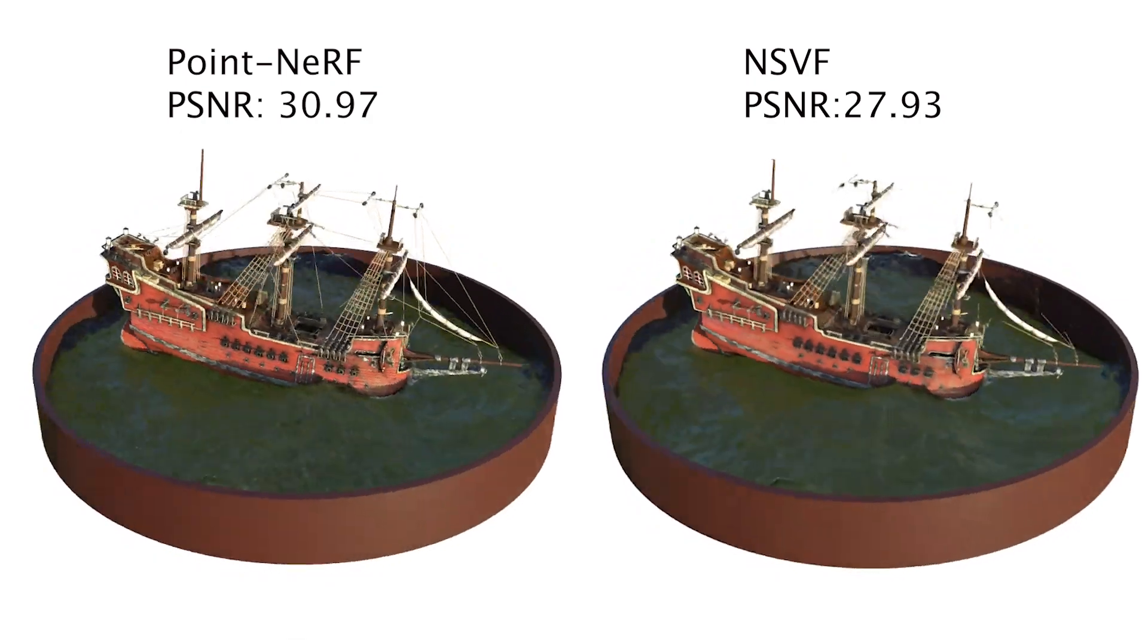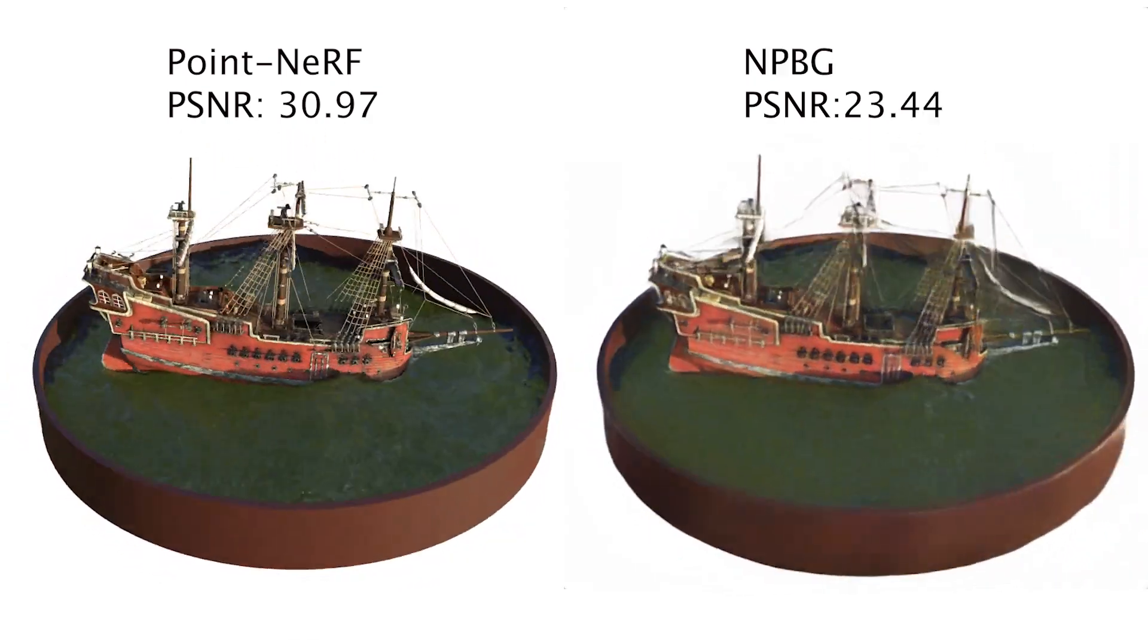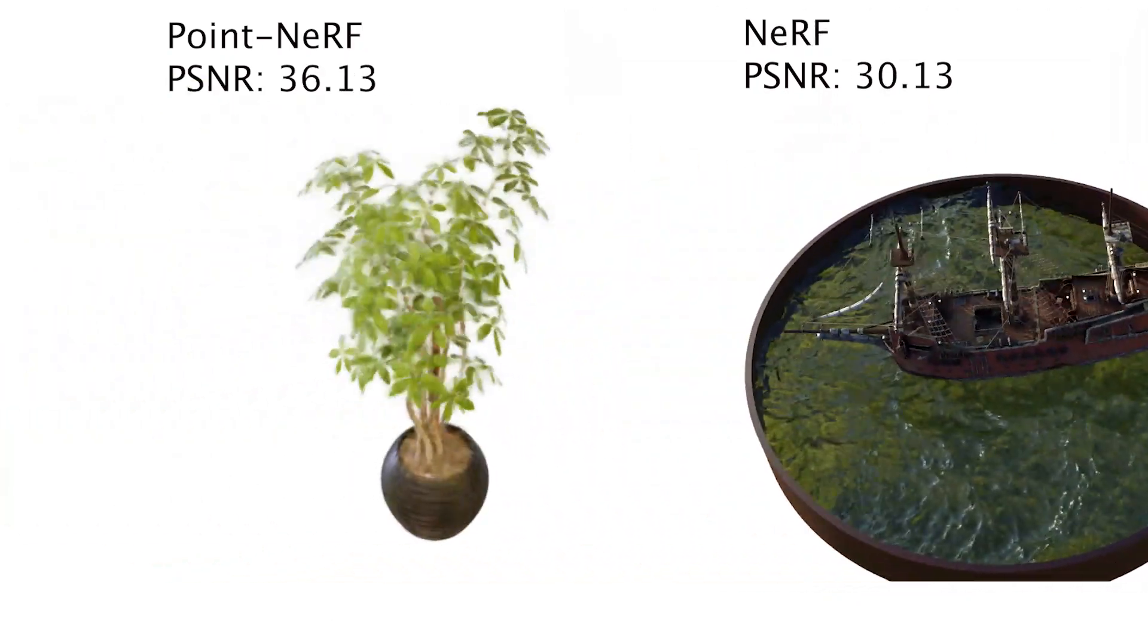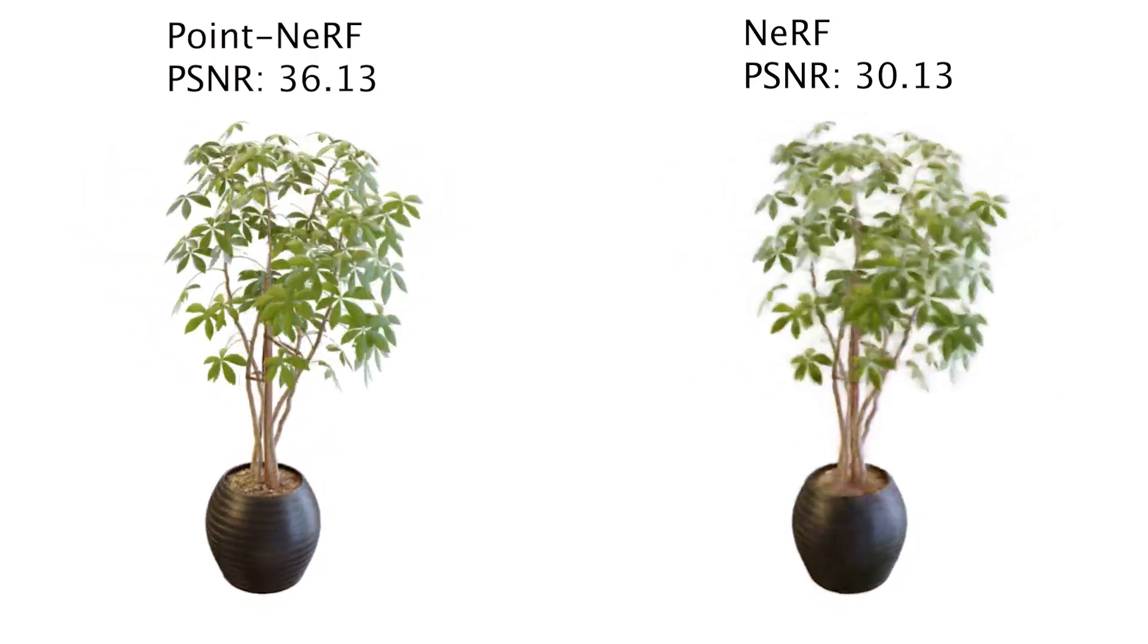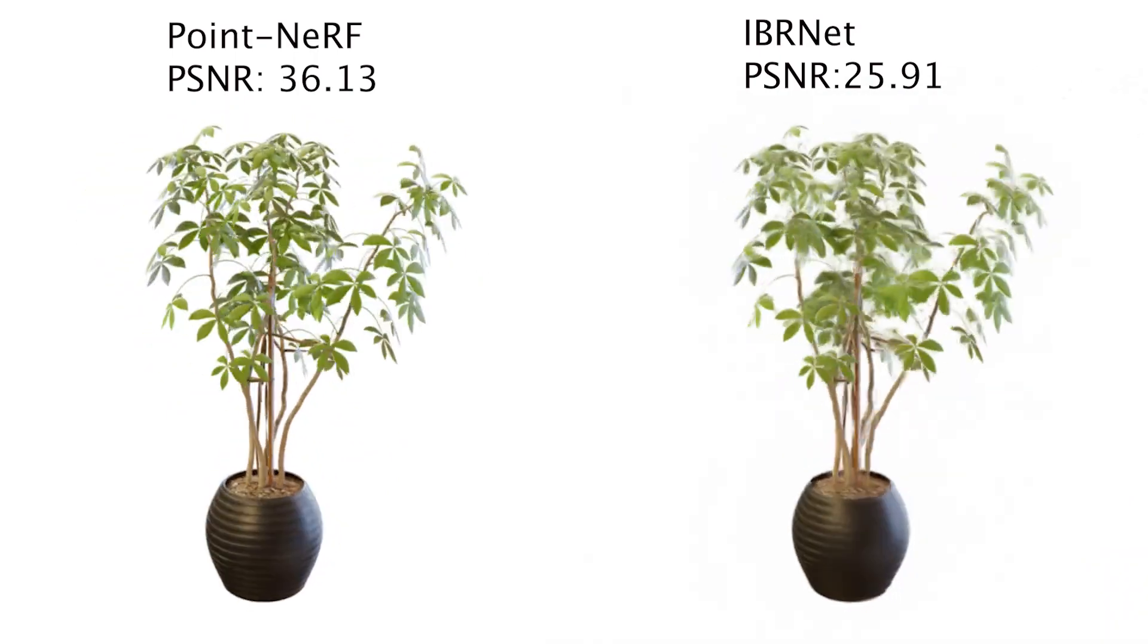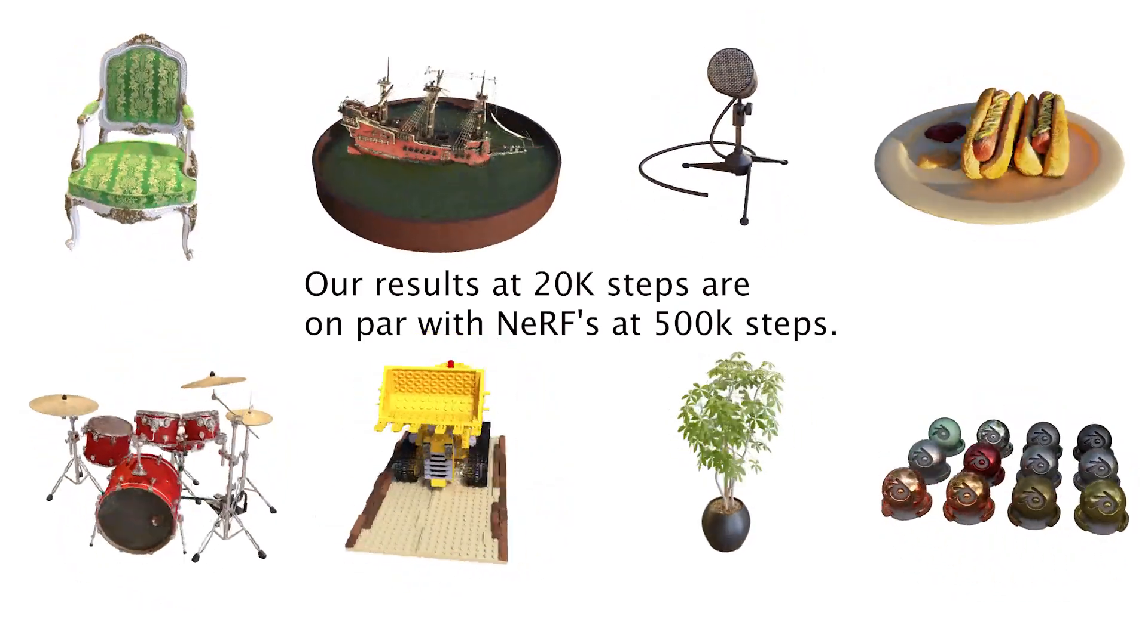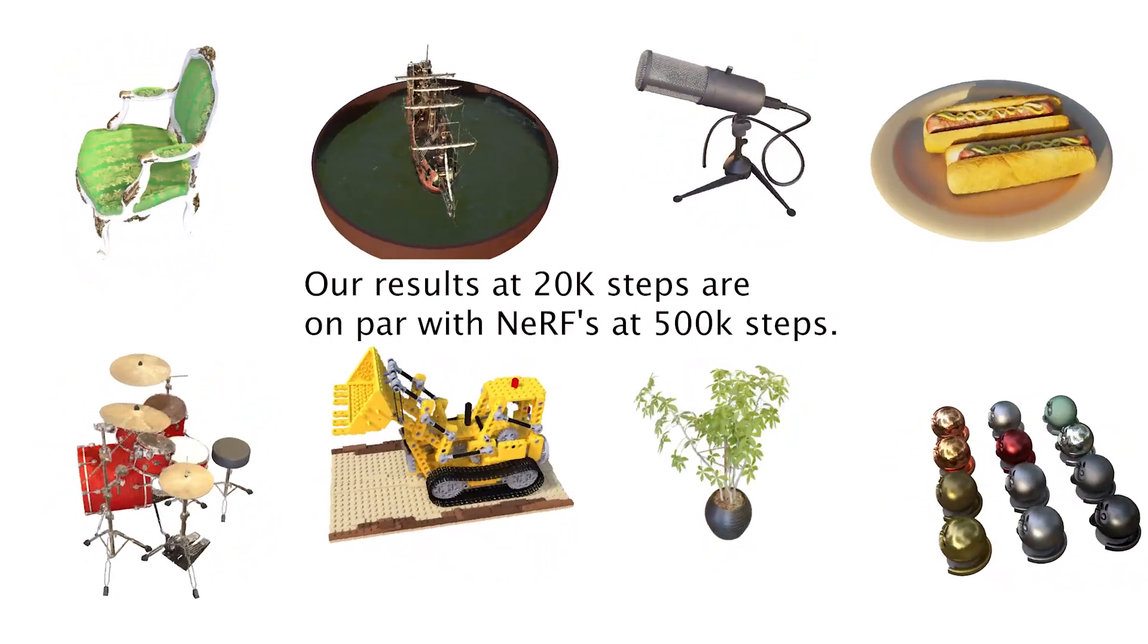Since the radiance field is distributed as point features, a local representation without the limitation of resolution, PointNRF can encode more fine-grained details and high-frequency information, thus finally achieves better rendering quality than NeRF, sparse voxel-based NeRF methods, and other point-based rendering methods. PointNRF also achieves a convergence speed which is 30 times faster than NeRF.